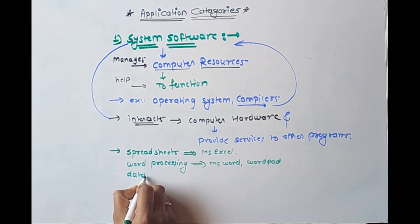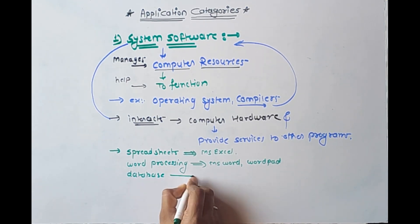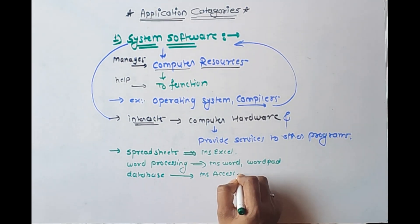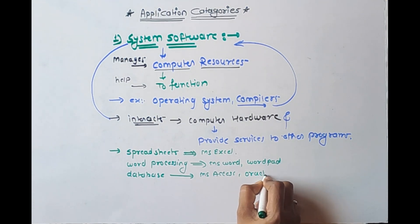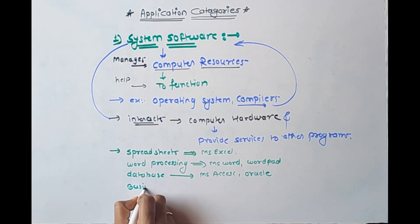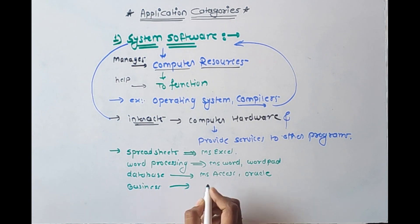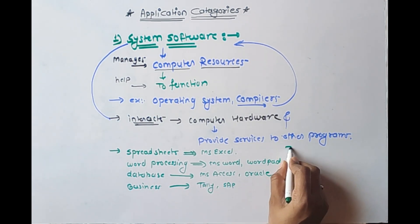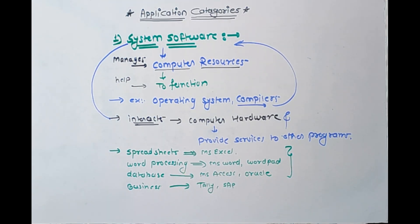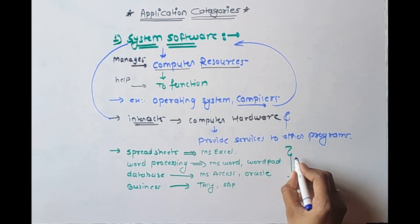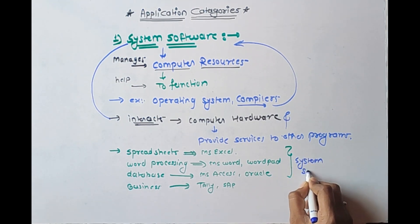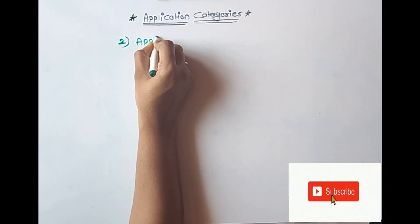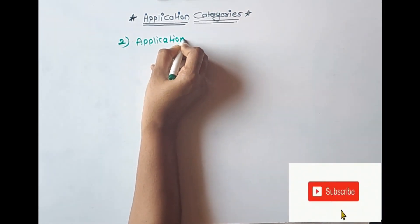Then database software, in which we can take MS SQL and Oracle. Also business software such as Tally and SAP. So these are all the examples considered under system software.